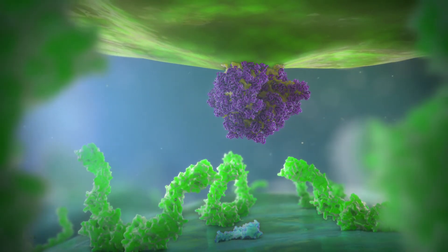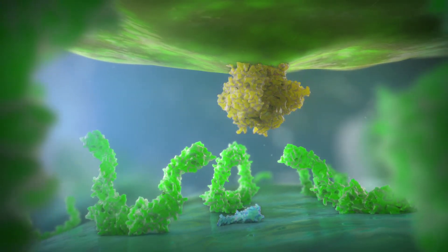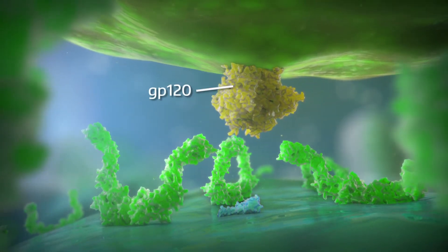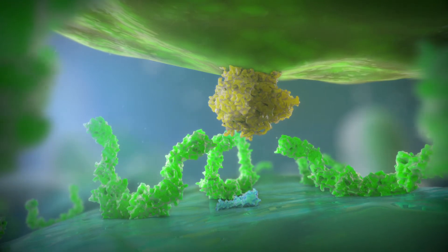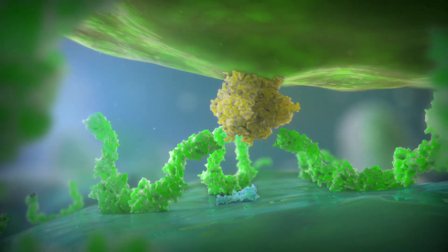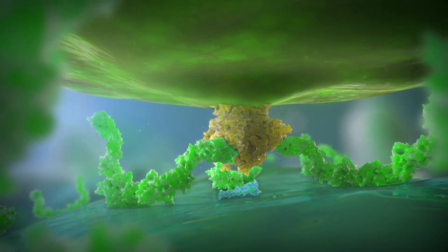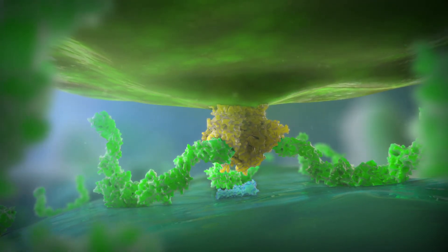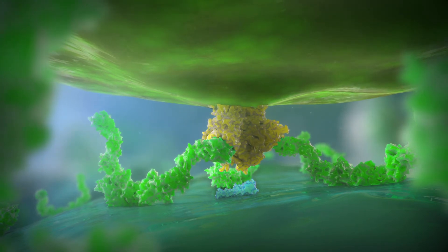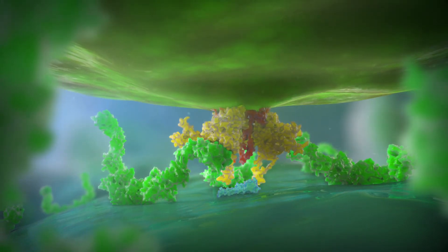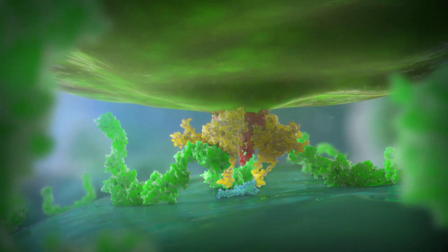At the core of each spike is a trimer of two types of viral proteins, GP120 and GP41. Viral entry begins when the GP120 active site binds to the D1 domain of CD4. This binding causes a structural shift in the envelope glycoprotein, exposing a second active site of GP120.